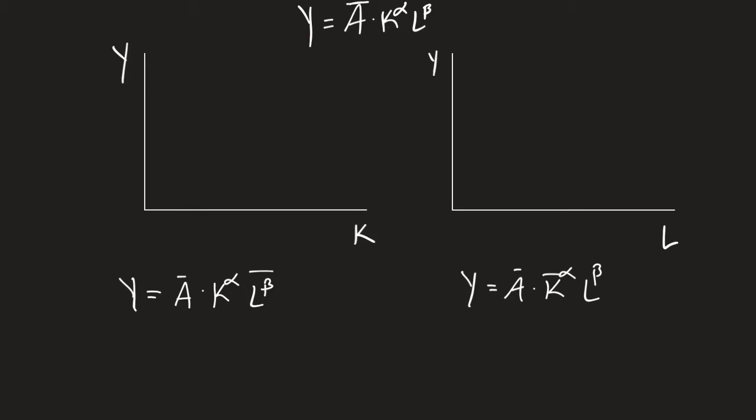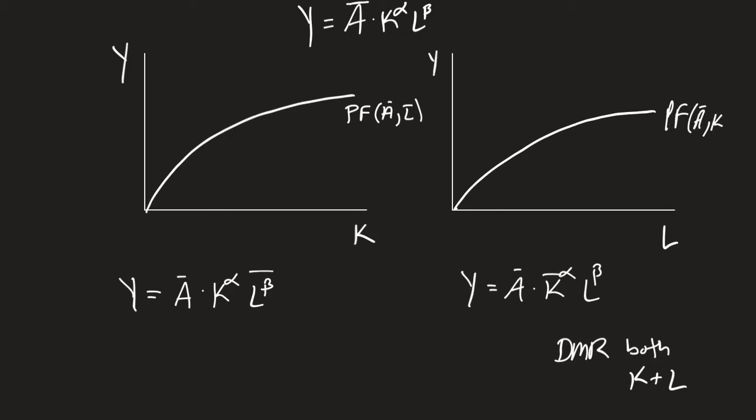So what we also know, which we've talked about, is we're going to have diminishing marginal returns to both capital and labor. That means our alpha and our beta are going to be between 0 and 1. So that's going to get us this production function that looks like our concave function here. So this is a production function where A is fixed and L is fixed. This is our production function where A is fixed and K is fixed.